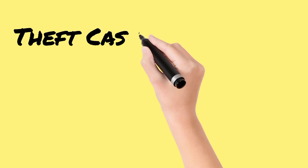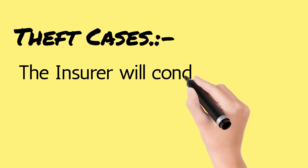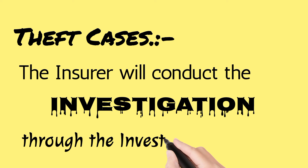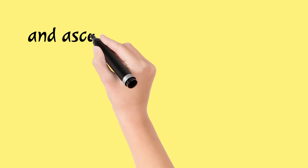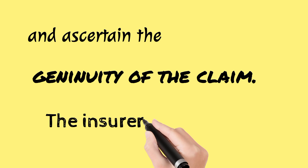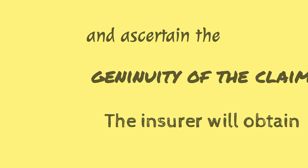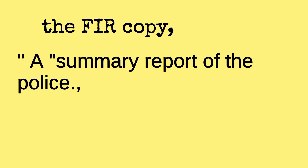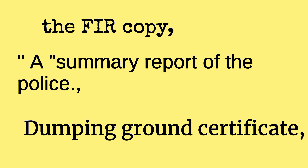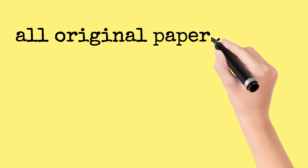In theft cases, the insurer will conduct an investigation through an investigator and ascertain the genuineness of the claim. The insurer will obtain the FIR copy, a summary report of the police, dumping ground certificate, and all original papers of the vehicle.